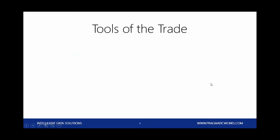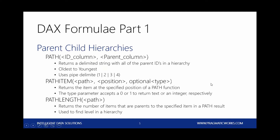Our tools for today are going to be some DAX formulas. For our parent-child hierarchies, we're going to learn three new functions: PATH, PATH ITEM, and PATH LENGTH. PATH returns a delimited hierarchy from oldest to youngest. PATH ITEM returns a particular item in the hierarchy. And PATH LENGTH returns the number of items that are parents to the current item, which tells you how deep you are in the hierarchy.